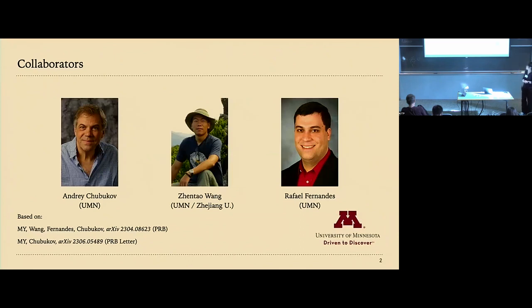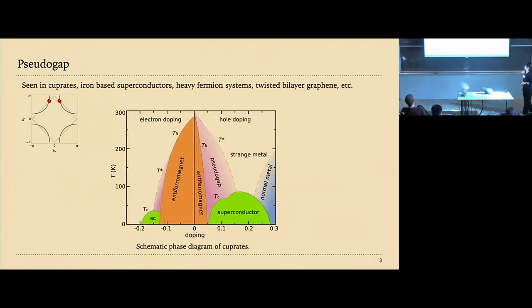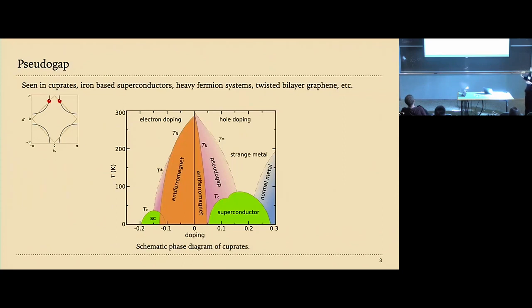This is based on two works we posted on arXiv this year. To start, let me show you what I mean by pseudo-gap here. It has been seen in various kinds of strongly correlated systems. Let me use a schematic phase diagram of cuprates as an example. One of the clear signatures of the pseudo-gap is the electron spectral function on the Fermi surface at the hotspots.